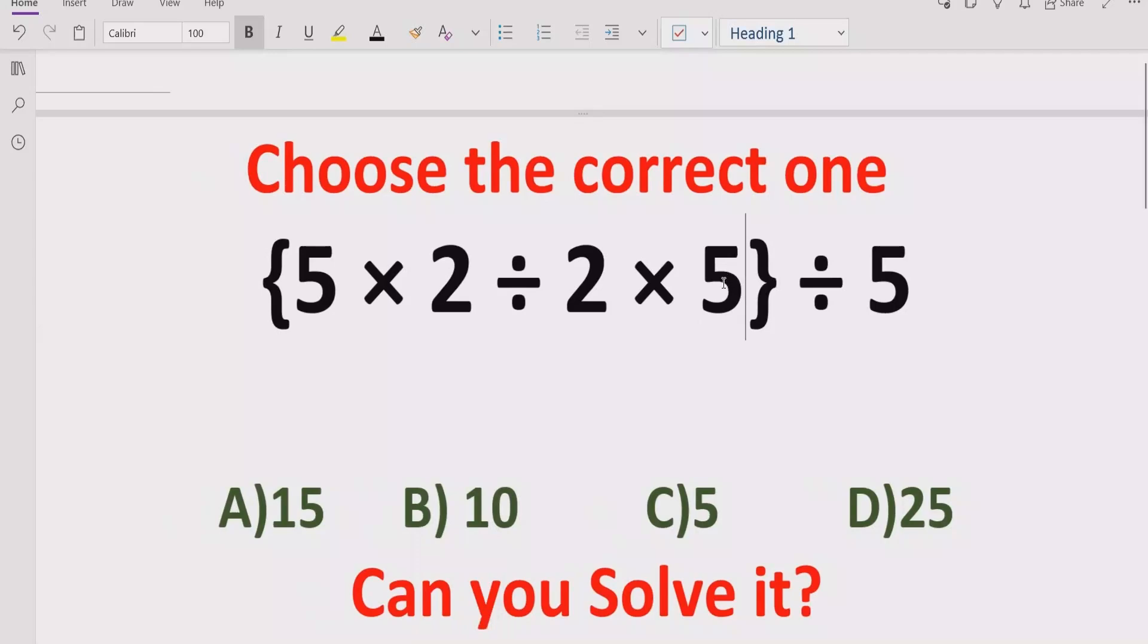We have to solve this quiz using PEMDAS and BODMAS method to find the correct answer. In the answer list, we have four answers: 15, 10, 5, and 25. Let's see after solving it which answer is correct.